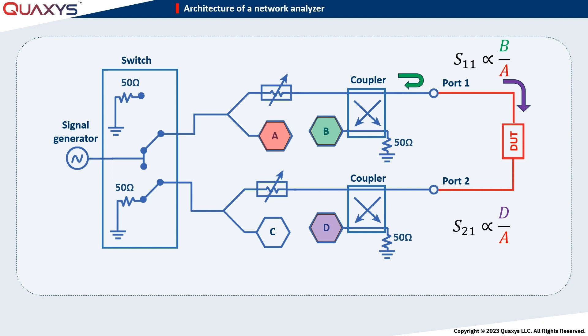For measurements of S22 and S12, the switch position is changed, directing the generated signal into port 2, as will be illustrated next.